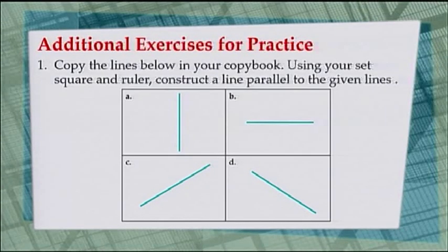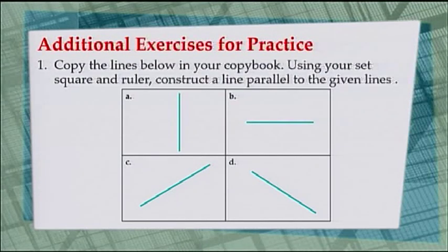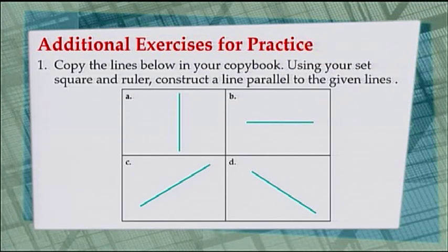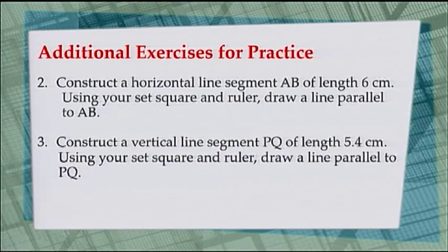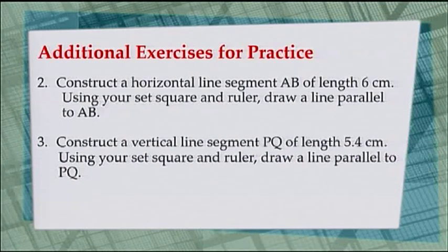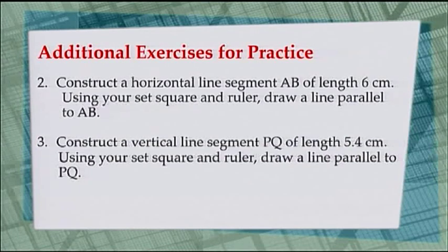Now, some exercises for you to practice. Copy the lines below in your copy book and use your set square and ruler to construct a line parallel to the given lines — you can do it either left, right, up or down. Second, construct a horizontal line segment AB of length 6 cm and draw a line parallel to it using your set square and ruler. Third, construct a vertical line segment PQ of length 5.4 cm and using your set square and ruler, draw a line parallel to PQ.